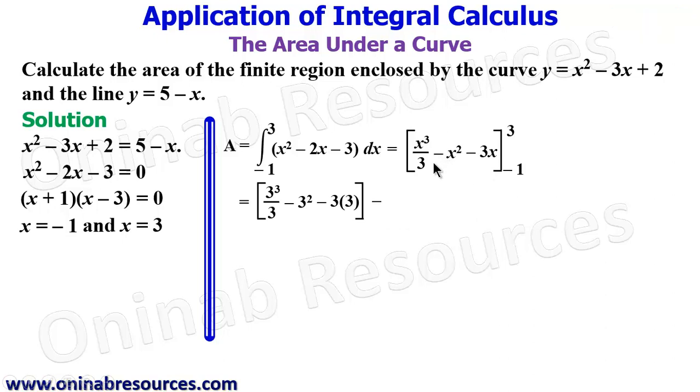Then minus, we substitute in the lower limit, (-1)³/3 - (-1)² - 3 × (-1). We simplify. This is going to give us 9. We simplify the lower limit, this is -1/3, then -1, -3 × -1 gives +3.